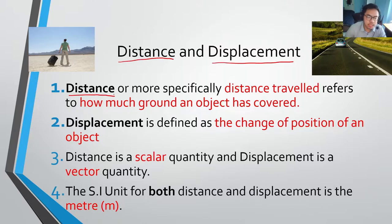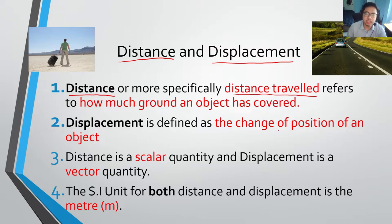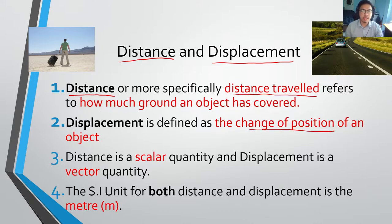So what is distance? This is quite straightforward. Distance, or more specifically the distance traveled, refers to how much ground an object has covered. What about displacement? This is a new word. Displacement is defined as the change of position of an object. We'll do an example to show you the differences between these two quantities.